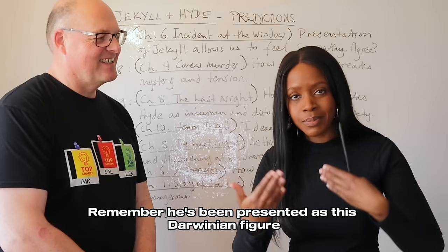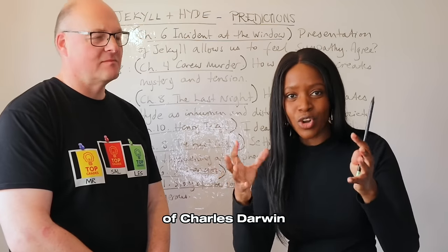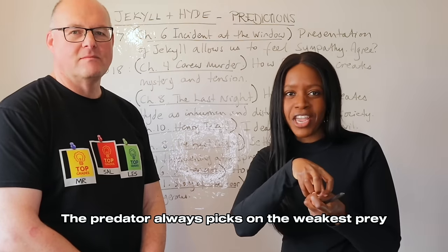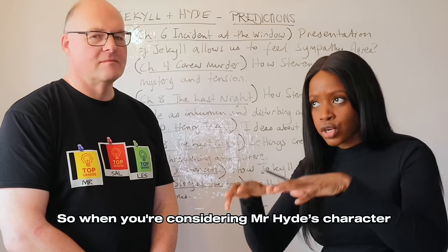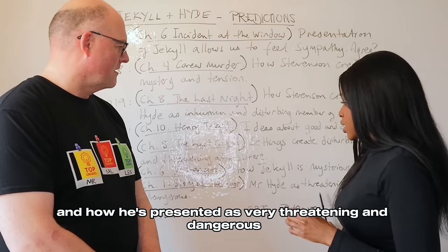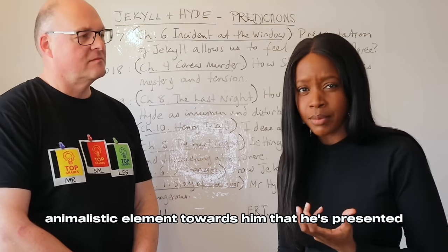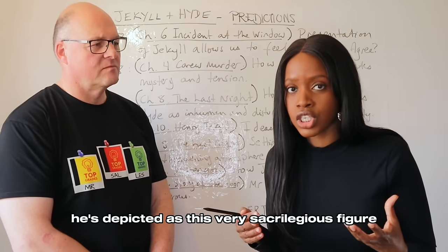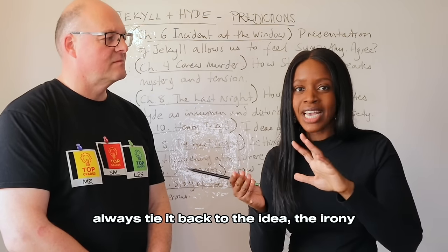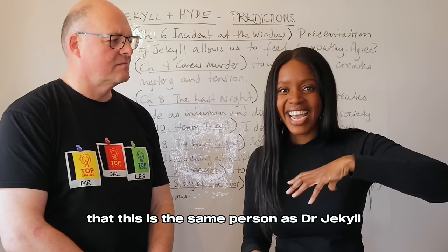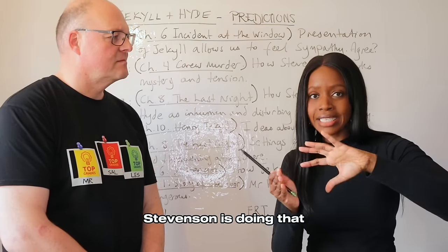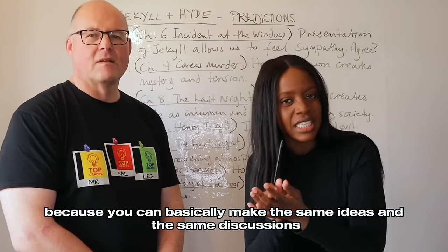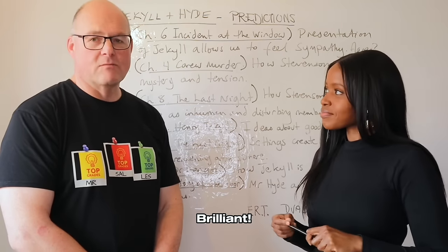Hyde's actions seem very predatory, especially regarding the murder of Sir Danvers Carew. He's a Darwinian figure — in Darwin's world of survival of the fittest, the predator always picks on the weakest prey rather than someone its own size. So when considering Mr. Hyde as threatening and dangerous, there's a deeply disturbing animalistic element to him. He's also depicted as a sacrilegious figure. In any Hyde discussion, always tie it back to the irony that he is the same person as Dr. Jekyll, who is supposedly very moral and Christian. Stevenson draws on the contradictions of human nature.